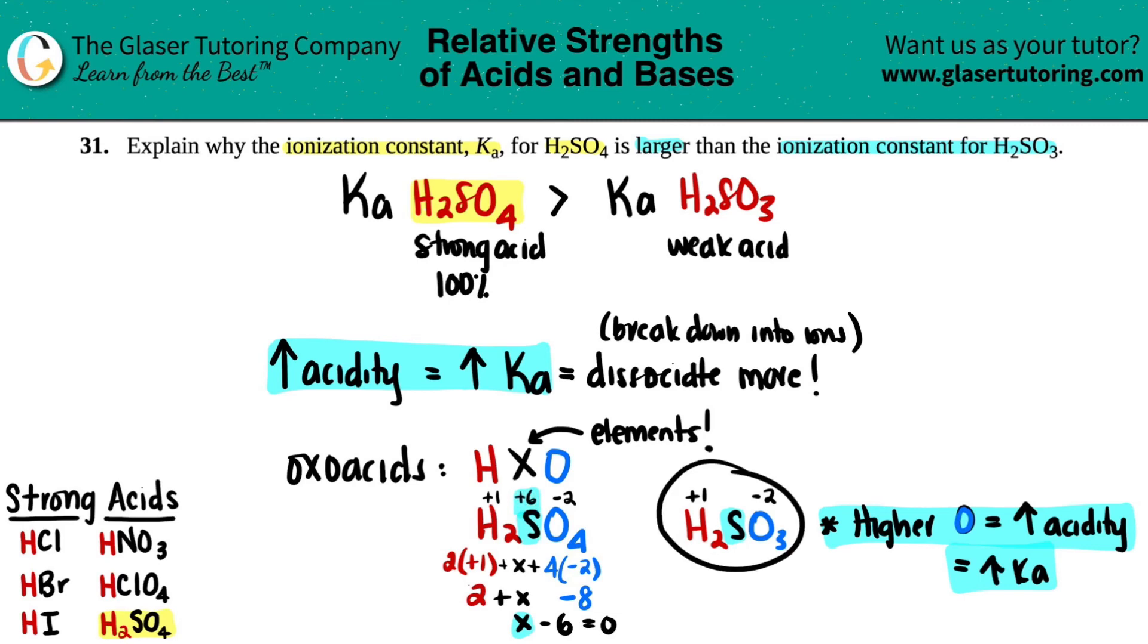So sulfur had a plus six charge. If we did the same thing here, you would say two times a plus one. For oxygen, it would be three times a negative two. So you have a two over here and a negative six over here coming together with the X value. We're trying to solve for sulfur. So this would be X minus four equals zero, which would give us a plus four charge.